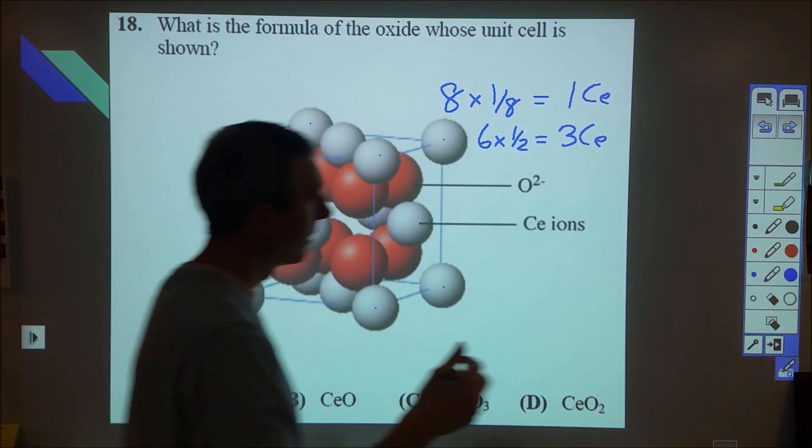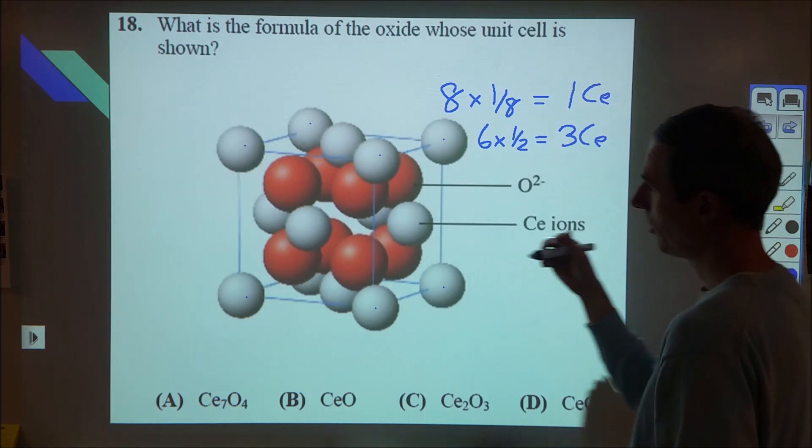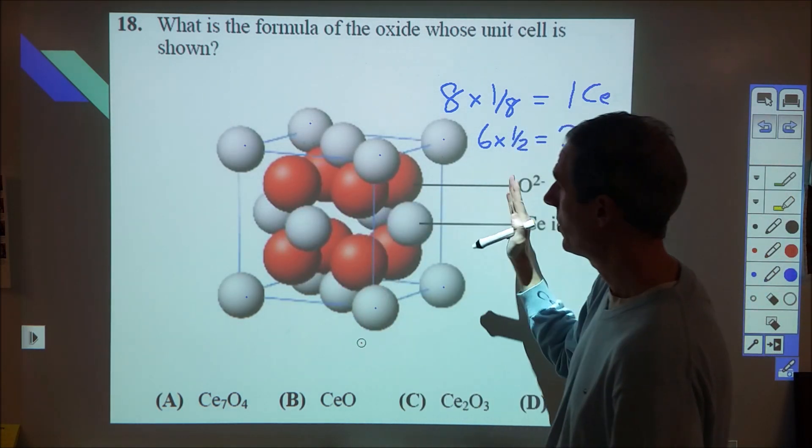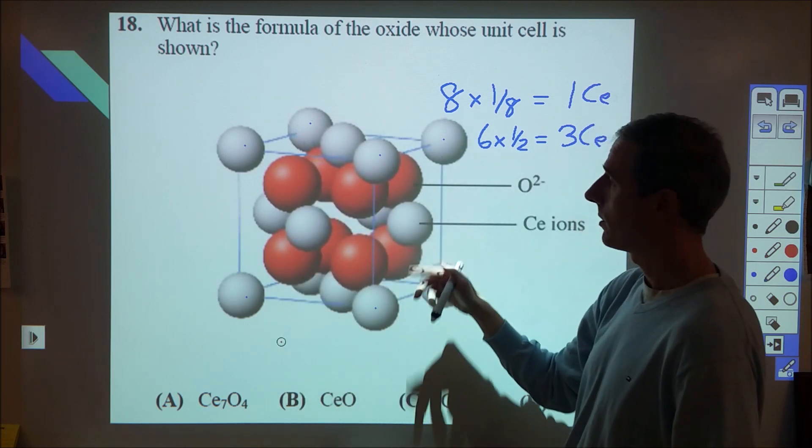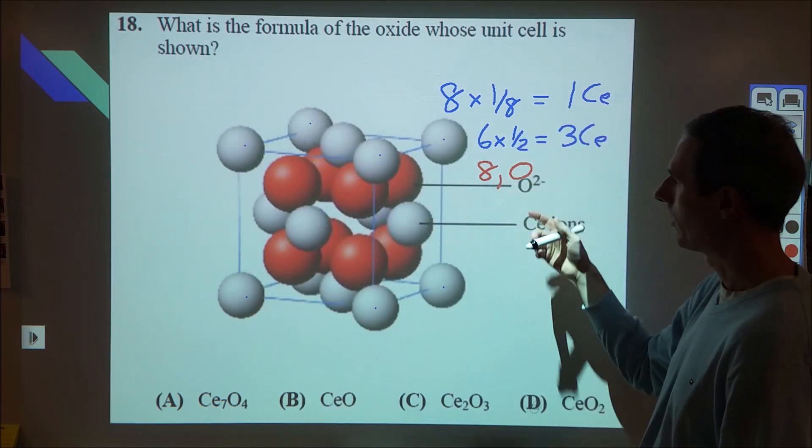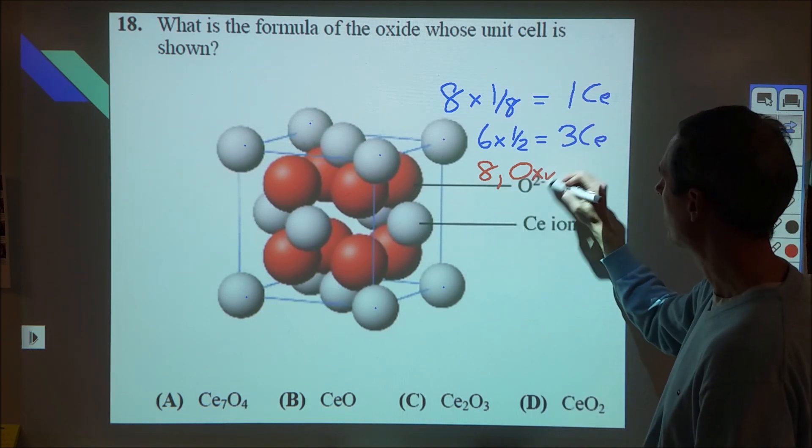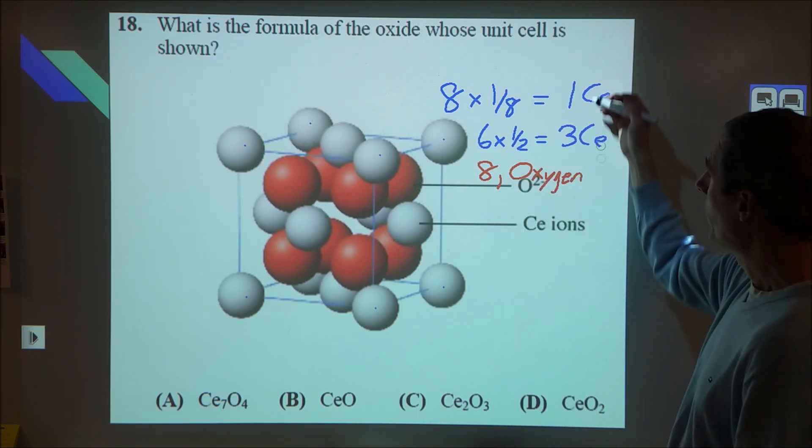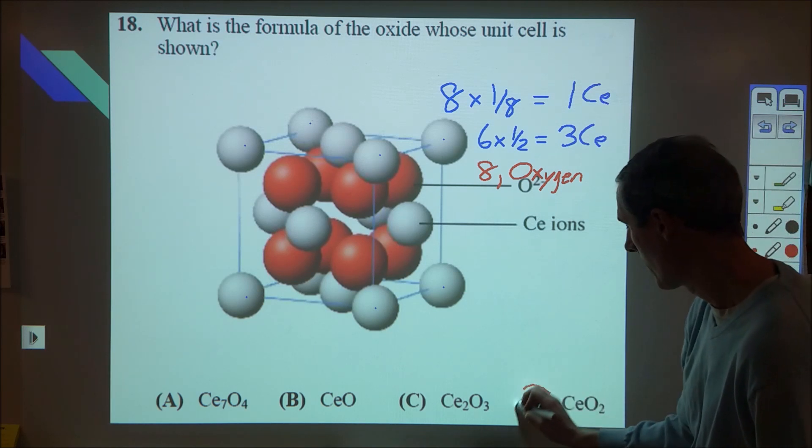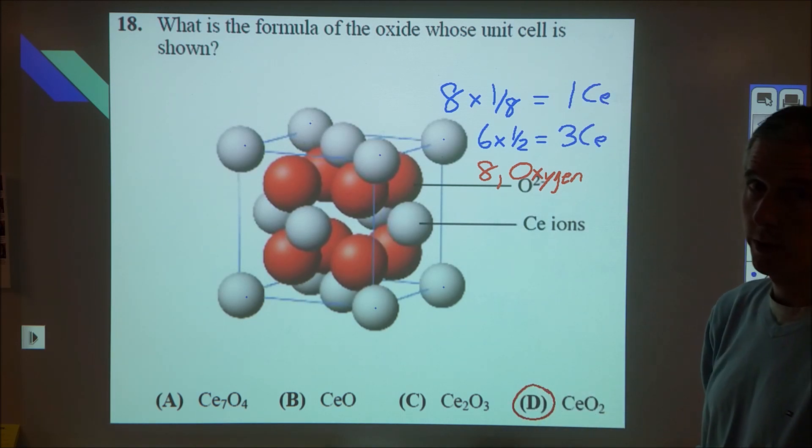Every oxygen – it may not look like it – every oxygen here is internal to the unit cell, so this is not actually shared between different unit cells. The next cube would have its own set of those oxygens, so there are eight oxygens total. We have four ceriums and eight oxygens, that gives us a ratio of CeO2, and D is our correct choice there.